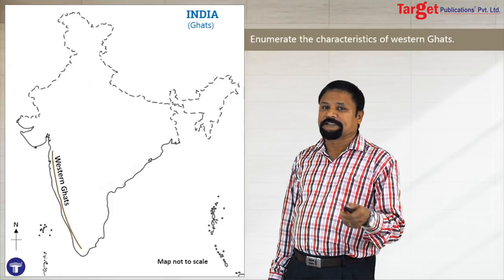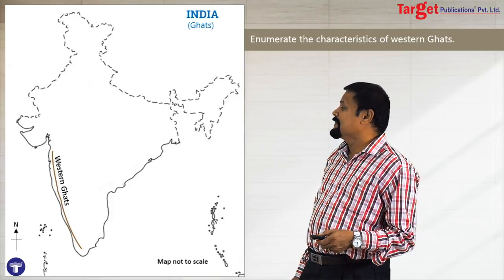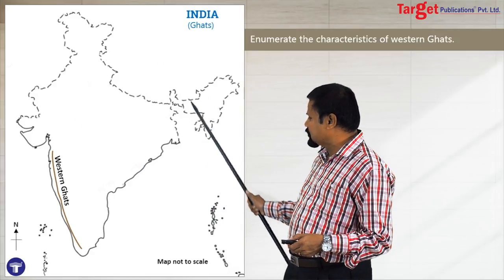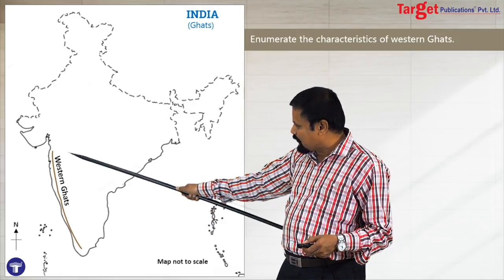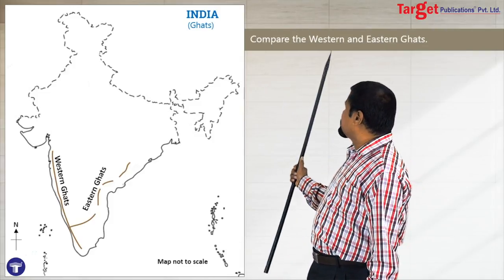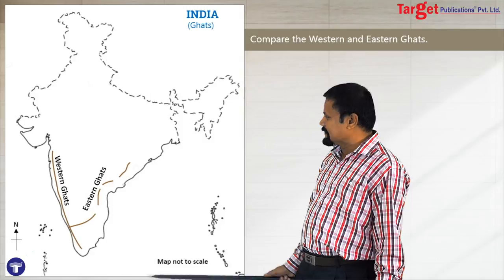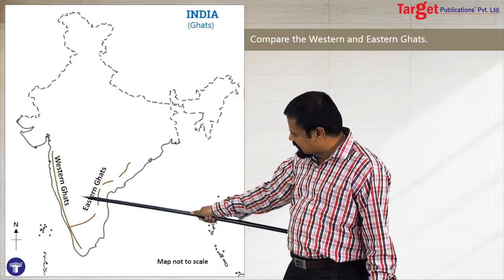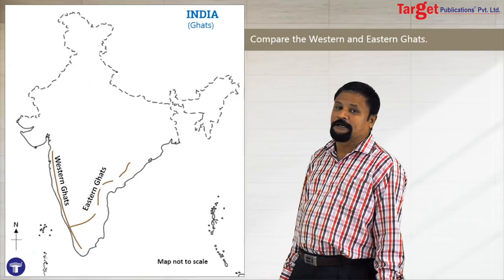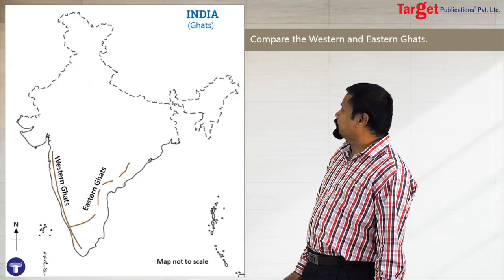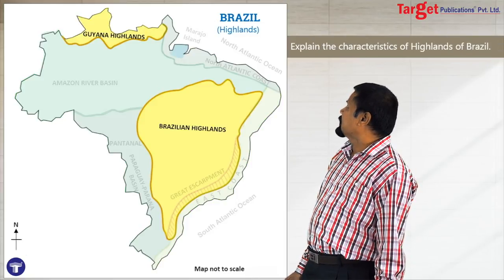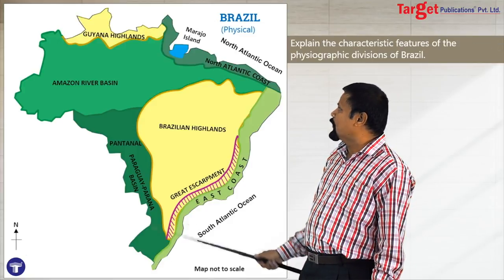Sometimes the question may be about a particular physical division. For example, if the question is about explaining the characteristics of the Western Ghats, you draw the stencil and show only the Western Ghats. If the question is about comparing the Western Ghats and the Eastern Ghats, you draw the Western Ghats and the Eastern Ghats also. The same approach applies to Brazil's physical divisions.